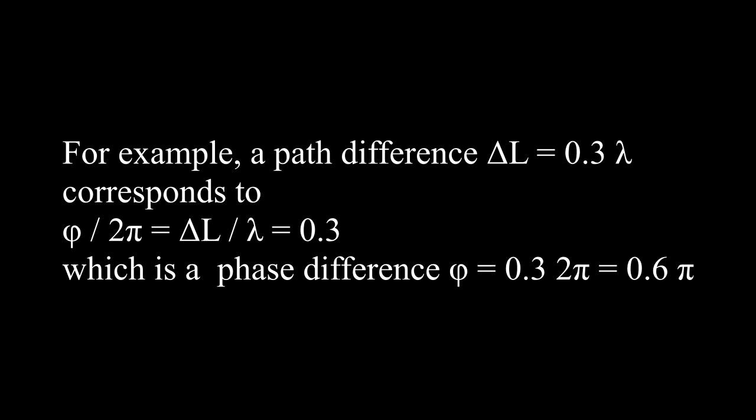For example, a path difference delta l equals 0.3 lambda corresponds to phi over 2 pi equal 0.3, which is a phase difference phi equals 0.6 pi.